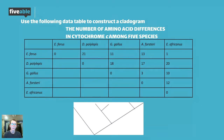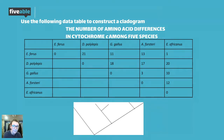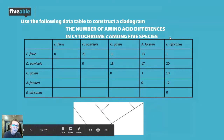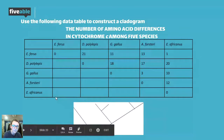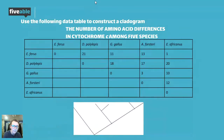D. polylepis belongs in the outlier group all the way to the left — it is the least like the others. In the middle V, I put the other two species: A. forsteri and G. gallus only have three amino acid differences from one another, so they're a good fit for the other sister taxon in the middle. The most important thing is that E. ferris and E. africanus are together, G. gallus and A. forsteri are together, and D. polylepis is on its own.